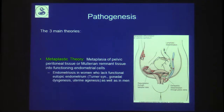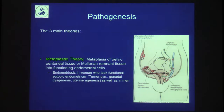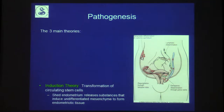Another theory is the metaplastic theory: metaplasia of peritoneal tissue or Müllerian remnant tissue into functioning cells. This can explain why you can see endometriosis in women who lack functional endometrium, such as Turner syndrome, and in rare cases even in men. Then there is the induction theory, which involves transformation of circulating stem cells.